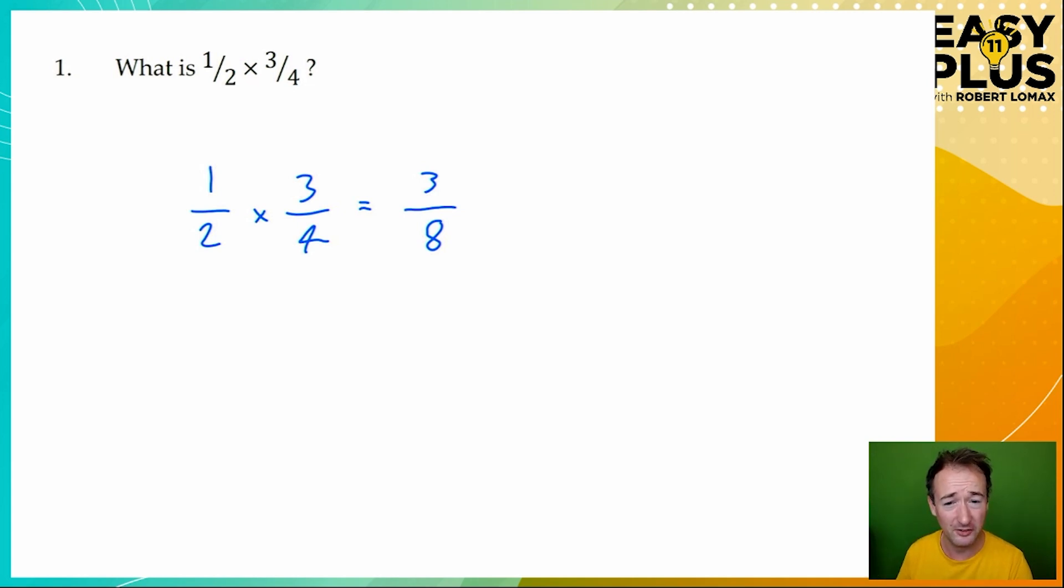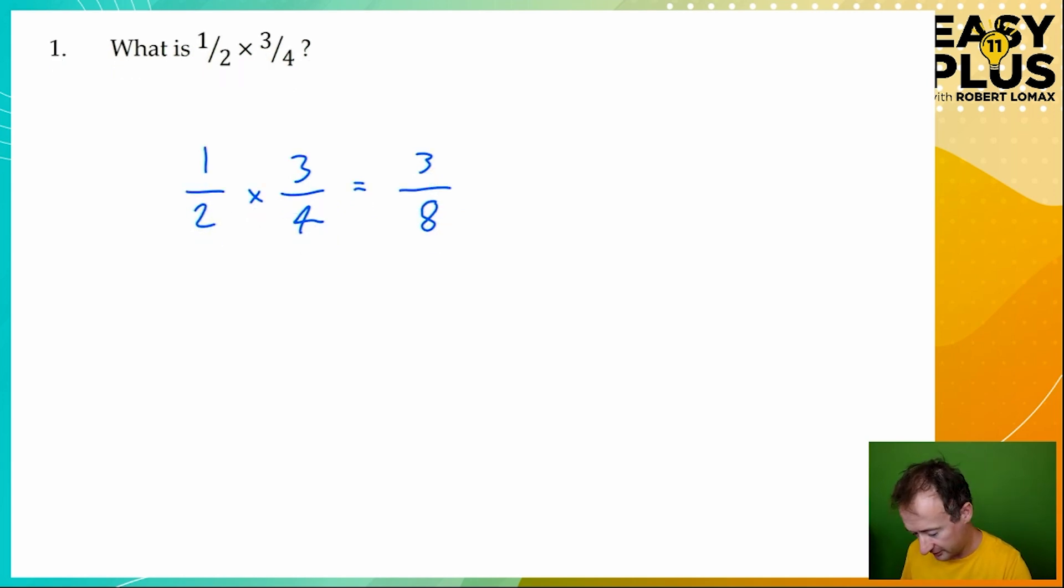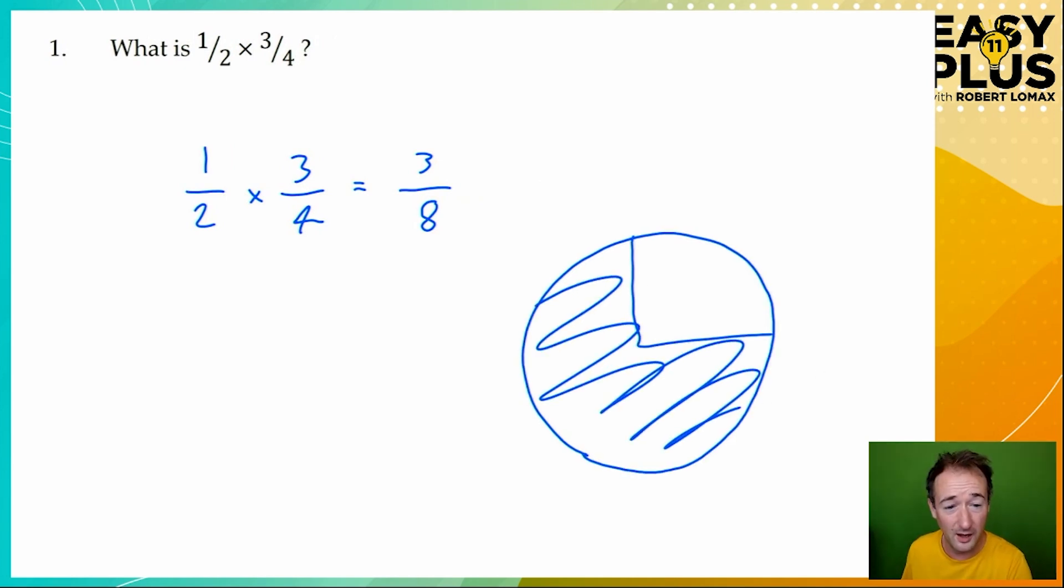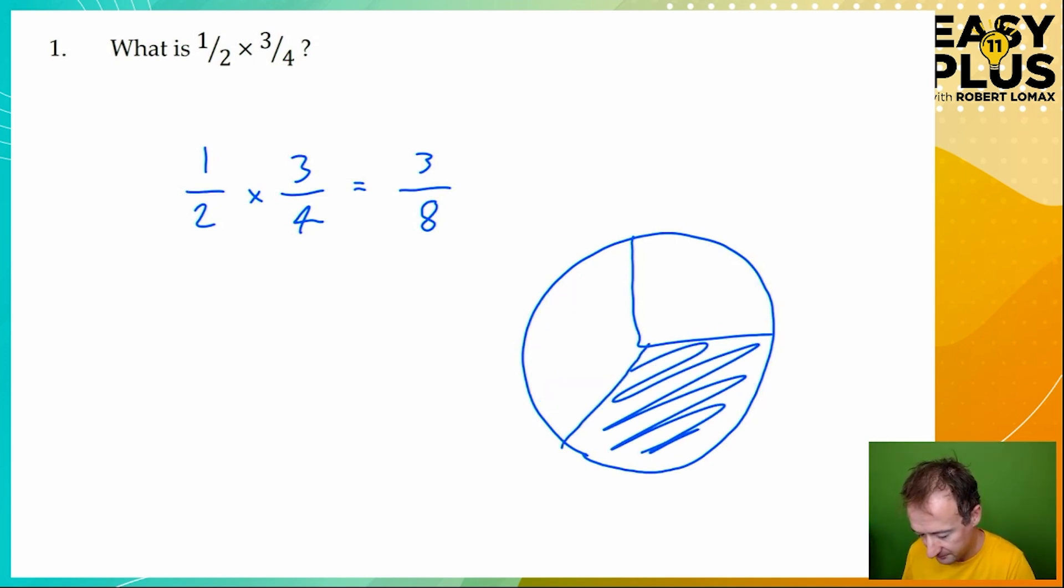And it's worth being able to imagine fractions in your head so that you can check that your answers are in the right ballpark. So if we think of a circle, three quarters would be something like this, and a half of three quarters would be this area here. And if you imagine breaking this into eighths, this shaded area here takes up one, two, three eighths. So we can see that it makes sense to describe a half of three quarters as three eighths. You don't always need to draw a pie diagram like this, but it's worth having one in your mind as you work with fractions.